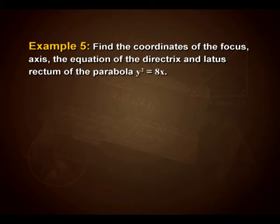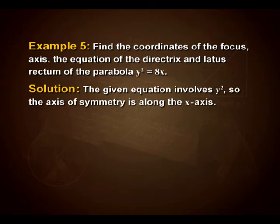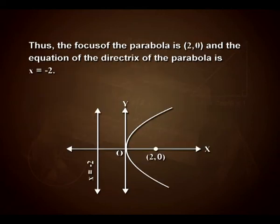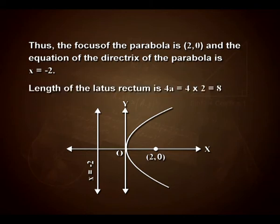Let us solve some examples involving parabolas. Example: find the coordinates of the focus, axis, equation of the directrix, and the latus rectum of the parabola y² = 8x. The given equation involves y², so the axis of symmetry is along the x-axis and the coefficient of x is positive, so the parabola opens to the right. Comparing with y² = 4ax, we find a = 2. Thus the focus is (2, 0), the equation of the directrix is x = −2, and the length of the latus rectum is 4a = 8.